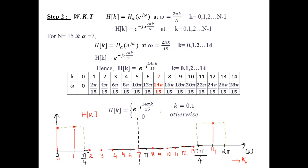Moving on to step 2: the H(k) values are found by applying HD(e^(jω)) at different values of ω = 2πk/N. So H(k) = e^(−jα · 2πk/N). Here we use a direct shortcut method, taking k from 0 to N−1. For N=15 and α=7, H(k) = e^(−j7 · 2πk/15) = e^(−j14πk/15), for k = 0, 1, 2, … 14.